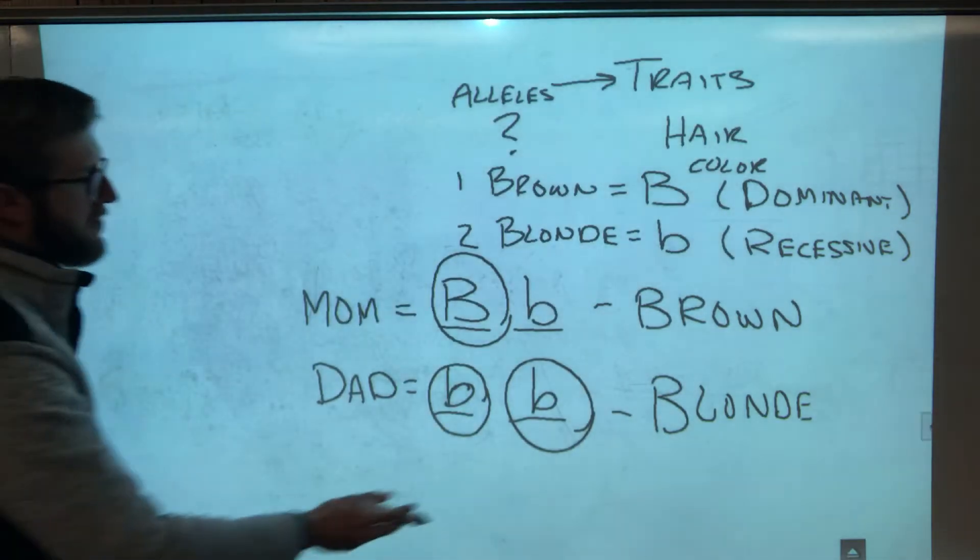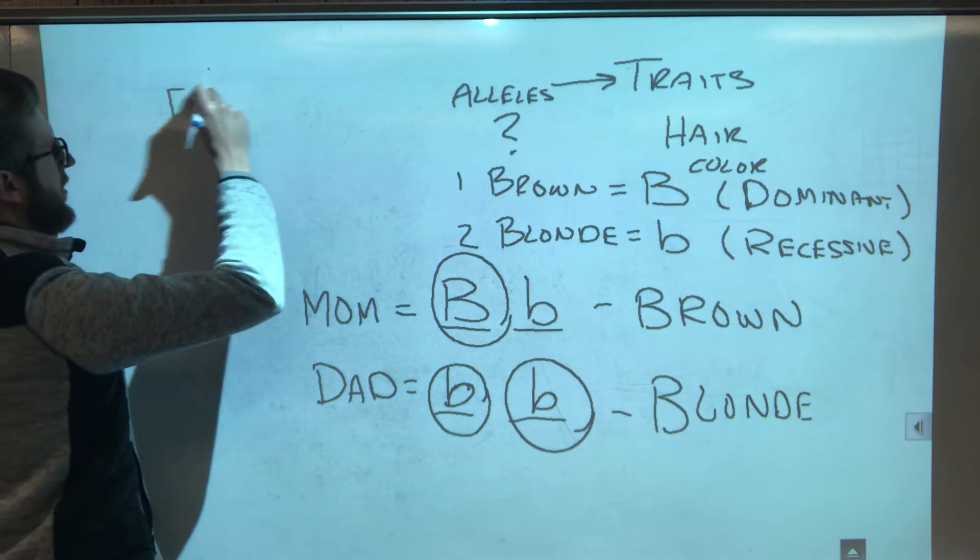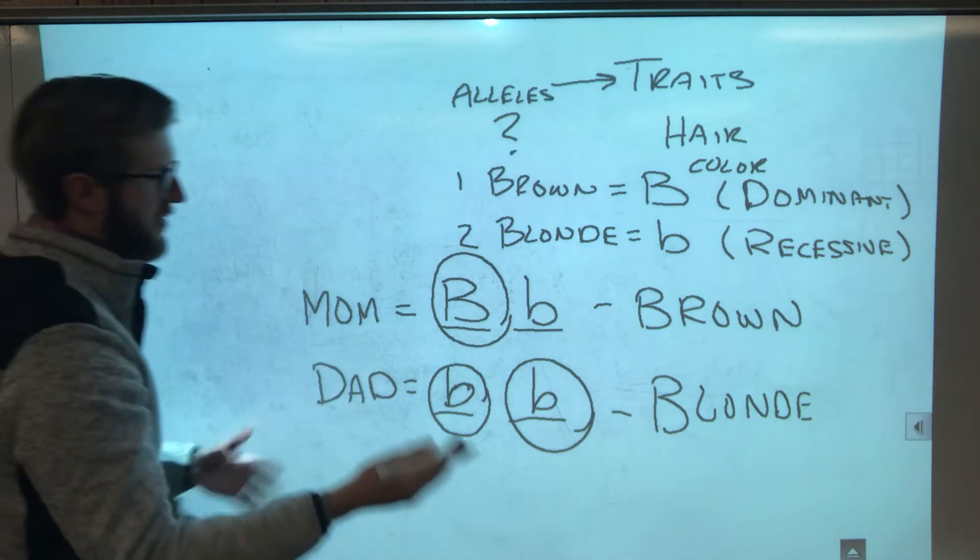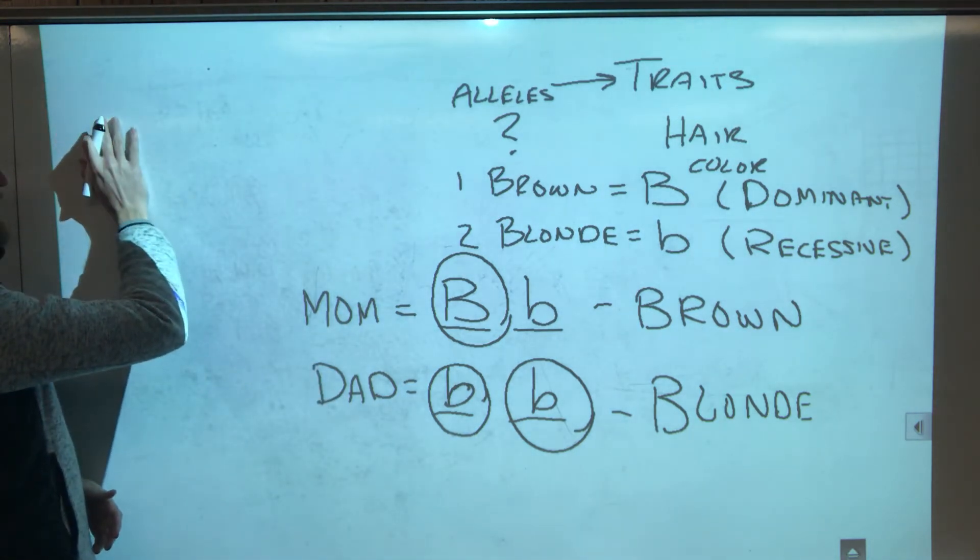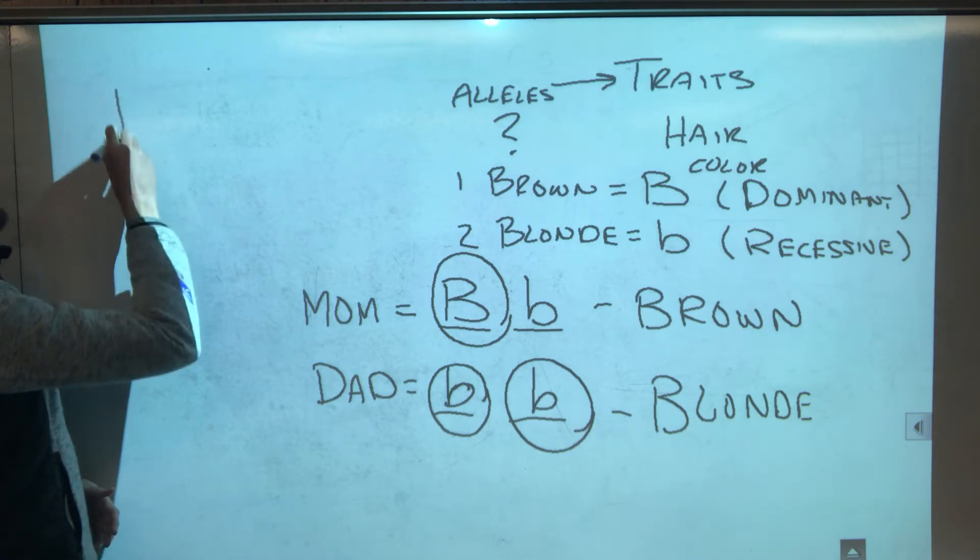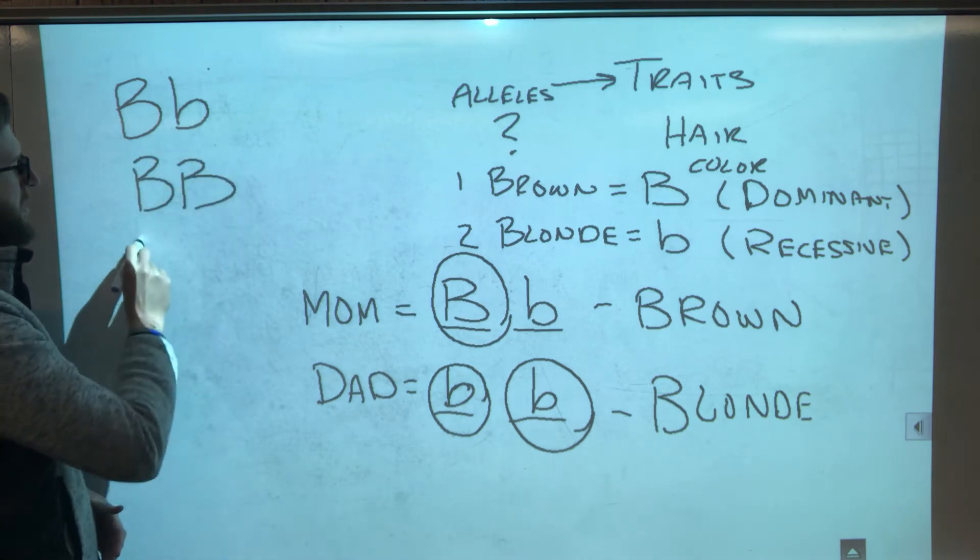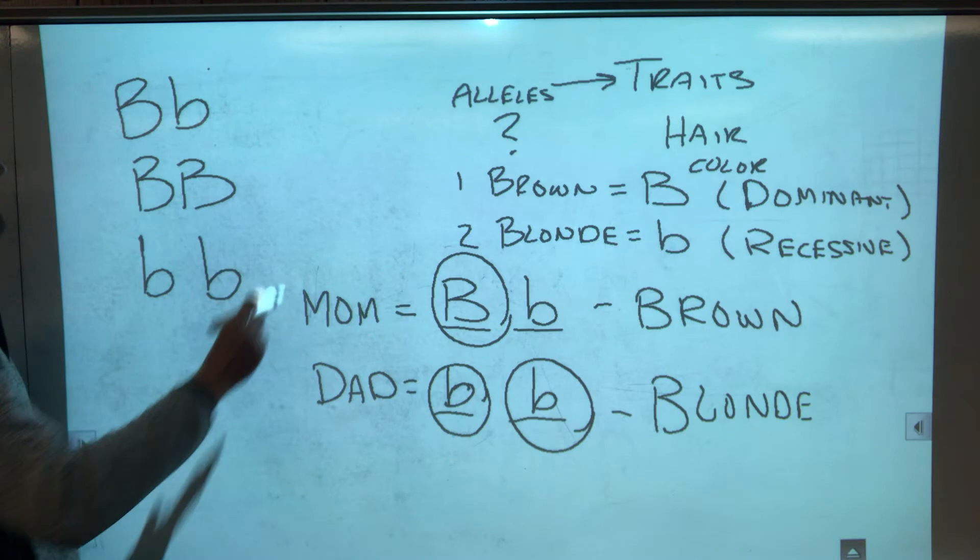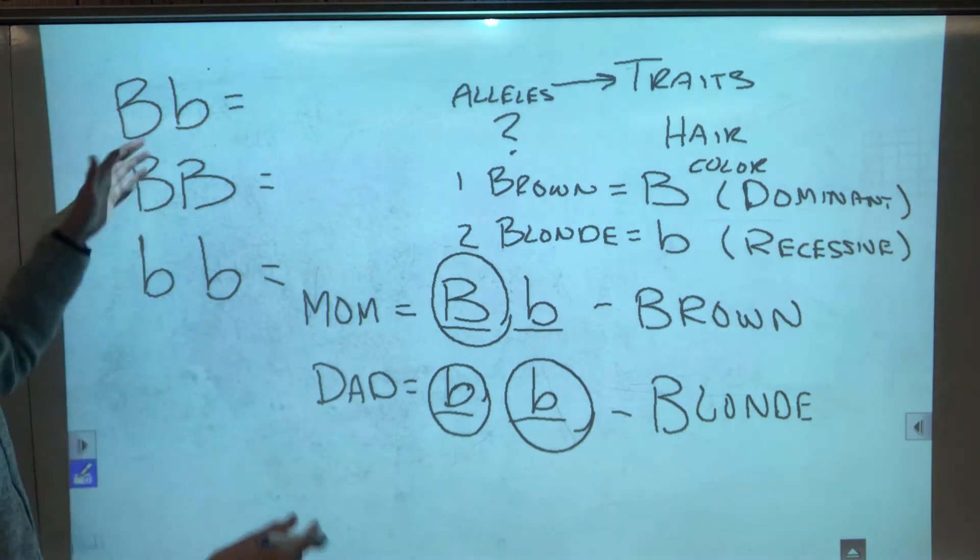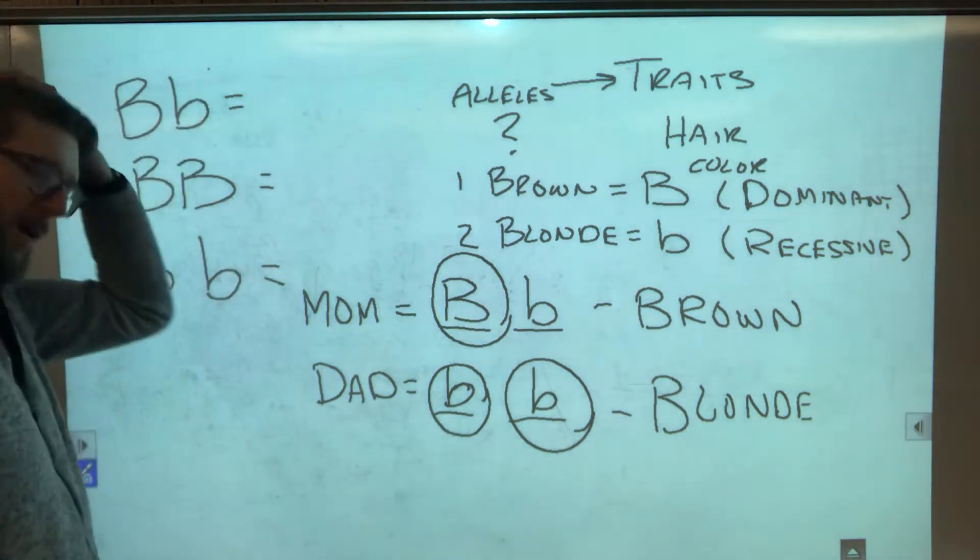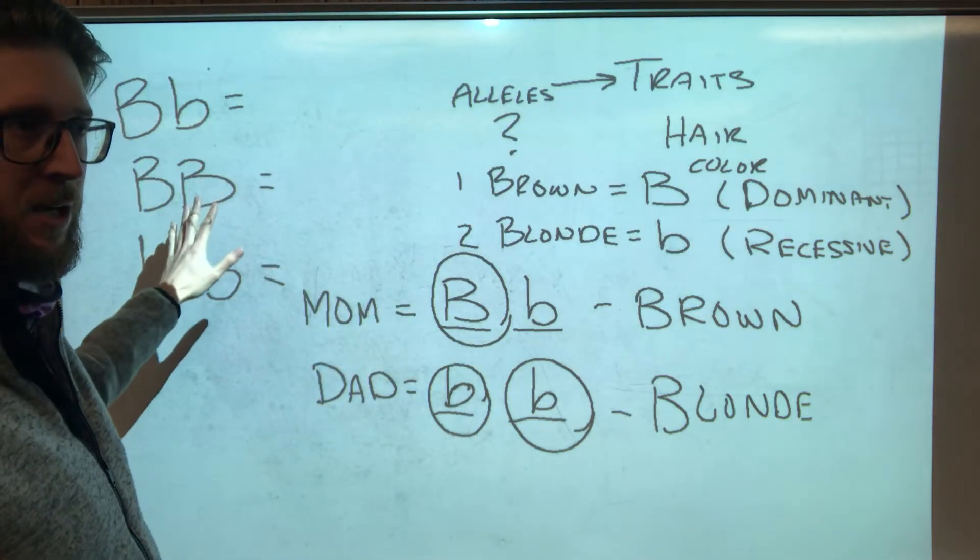Okay so let's say that mom is big B, little b. And dad is little b, little b. Well there's different combinations that their kids could have. But the different combinations we call different things. And this is where the homozygous and heterozygous come in. So let's say that they have kids. Now their kids could be different combinations of alleles. I'm not going to get into the Punnett Square on how to calculate that right now. I'm just wanting to talk about the difference between homozygous and heterozygous.